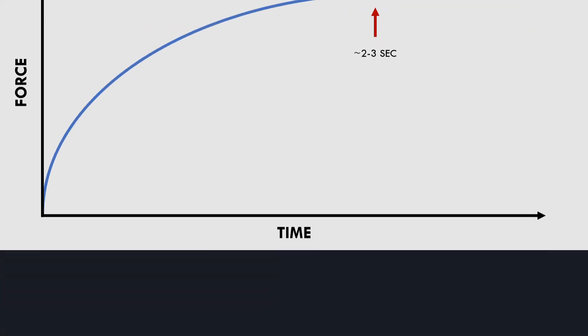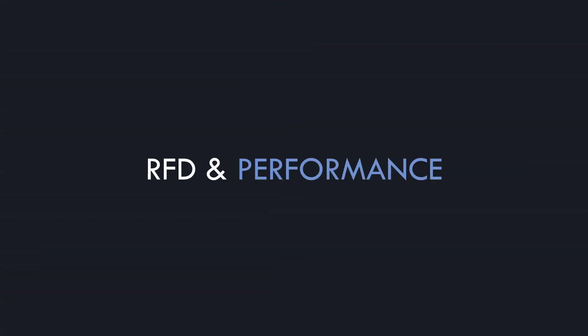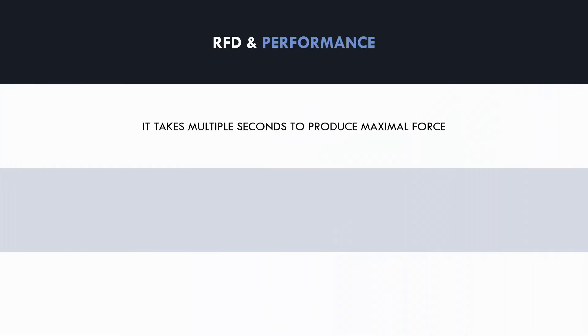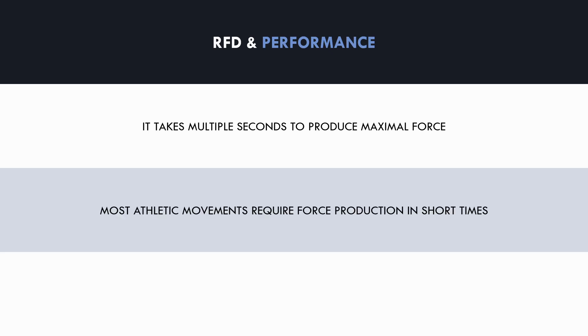So what does rate of force development mean for athletic performance? As we already established, it generally takes multiple seconds to produce maximal force. However, most athletic movements only allow force to be applied in a fraction of a second. For example, during a sprint, ground contact times are usually around 0.1 to 0.2 seconds.